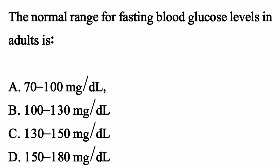The normal range for fasting blood glucose level in adults is — the correct option is Option A: 72 to 100 mg/dL.